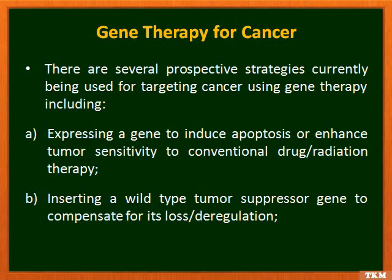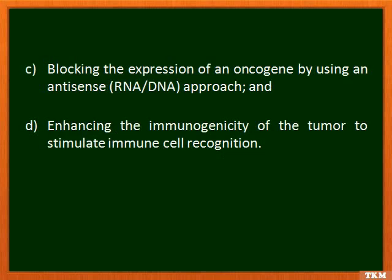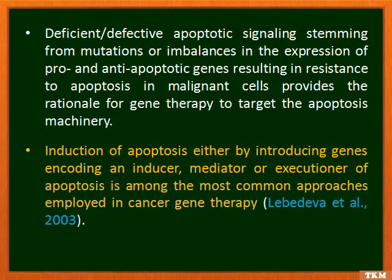There are several prospective strategies currently used for targeting cancer using gene therapy, such as expressing a gene to induce apoptosis or enhance tumor sensitivity to conventional drug or radiation therapy, inserting a wild-type tumor suppressor gene to compensate for its loss, and blocking the expression of an oncogene using an antisense approach or enhancing the immunogenicity of the tumor to stimulate immune cell recognition.